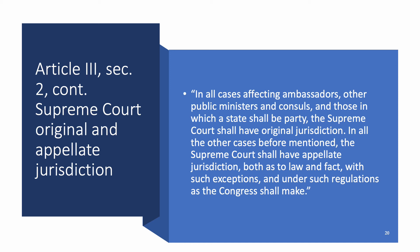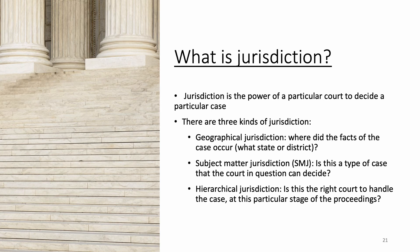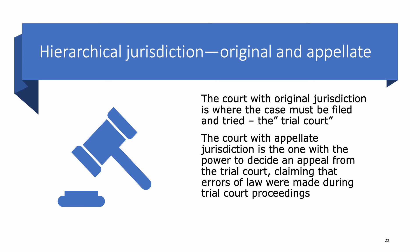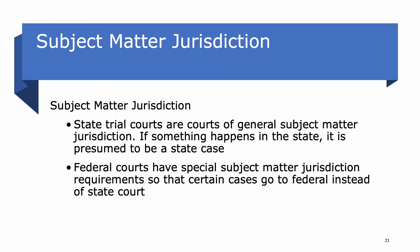The Supreme Court's original jurisdiction applies to a very tiny number of cases — basically where states sue each other. In everything else, the Supreme Court is a court of appellate jurisdiction — they hear appeals. To recap: hierarchical jurisdiction means the court with original jurisdiction is where the case is filed and tried, while the court with appellate jurisdiction decides any appeal claiming mistakes were made.